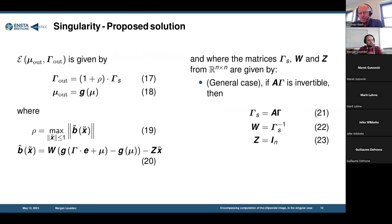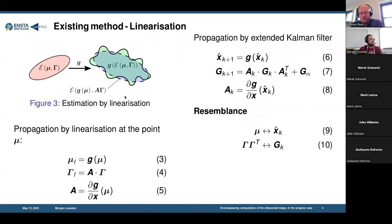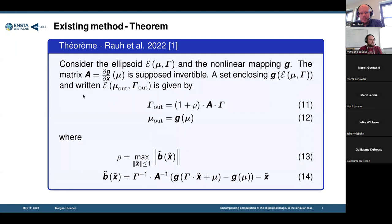Well, it's something I haven't pointed out, but the interest of this original method or the modified version is that to be able to compute the ellipsoid, you only need to know what is the image of the center and to be able to encompass the value of the Jacobian of the mapping. So it's not required to have the analytical expression of the mapping, which is relevant in the case of continuous time differential equations.